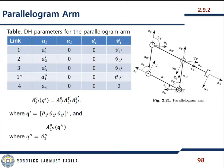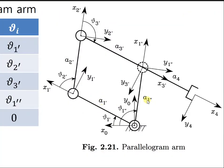Now let's consider the parallelogram closed chain example from figure 2.17. A closed chain occurs where the first two joints connect link 1 dash and link 1 double dash to link 0, forming a closed chain. Joint 4 is selected as the cut joint — we cut it open — and link frames are established accordingly.